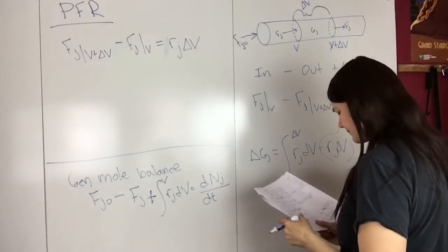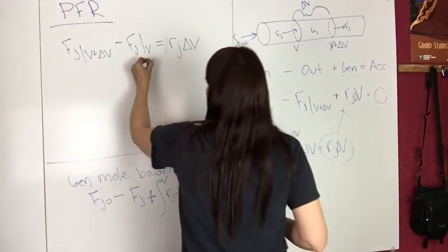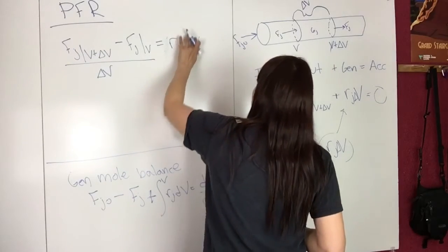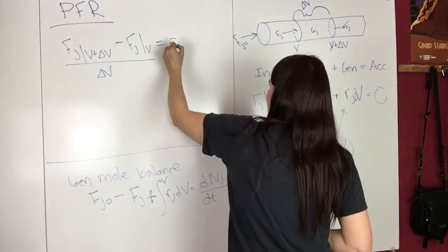We can divide this by delta V, and then the delta V on the right cancels out.